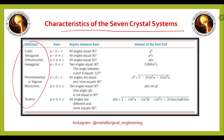In the first case, cubic: the relation between the axes is a = b = c, all angles are equal to 90 degrees, and the volume of the unit cell is a cube. In the second crystal system, tetragonal: a = b ≠ c, all angles are equal to 90 degrees, and this is the volume for tetragonal.